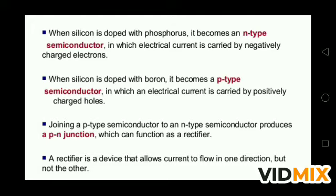When you join the P-type semiconductor to the N-type semiconductor, you get a junction which is called a P-N junction, and it has many uses. We will also discuss this in this chapter. An important term is the rectifier — a rectifier is a device that allows current to flow in one direction only. We have two types of rectifiers: the half-wave rectifier and the full-wave rectifier, which we will also discuss in this chapter.